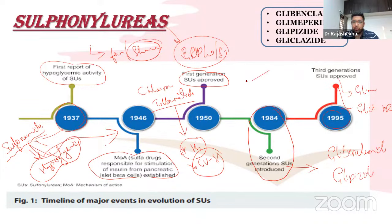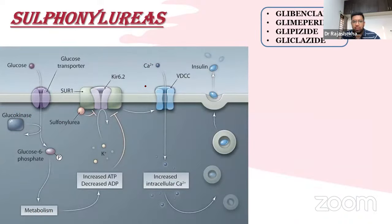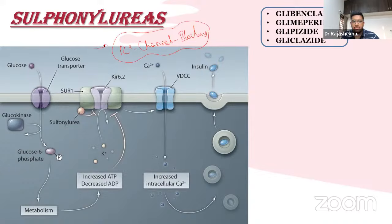Sulfonylureas are classified by generation (first, second, third), by mechanism, or by duration of action (short-acting, long-acting). Their mechanism of action is very important: they are potassium channel blockers. A common exam question is whether glimepiride opens or closes the potassium channel — the answer is they close the potassium channel.